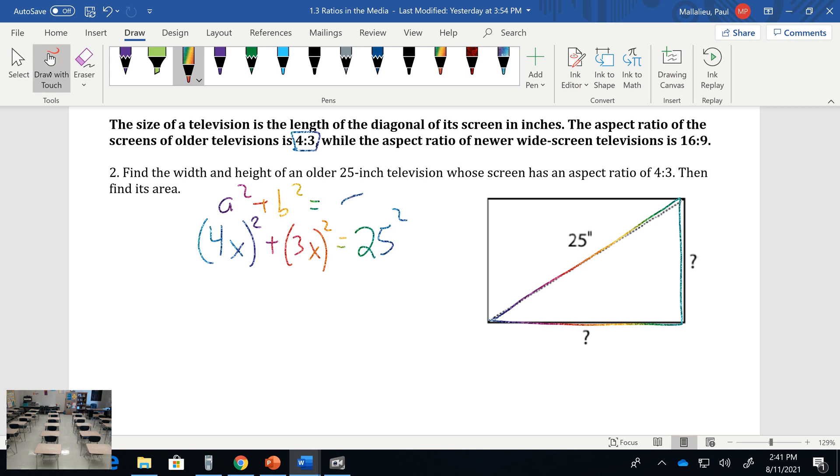It becomes very similar to what we did above. We see that this is 16X², this is 9X², and 25² is 625. Combine like terms, we get 25X² equals 625.